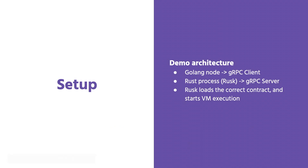Before diving into the demo, a little bit about the setup — it's very similar to the last one. I have the Golang node running with a gRPC client, and on the other end I have the Rusk server which has the gRPC server. These two talk to each other, and upon request Rusk will load the correct contract and start the VM execution.